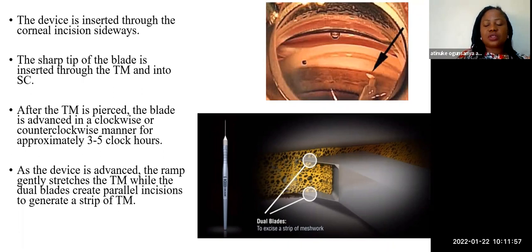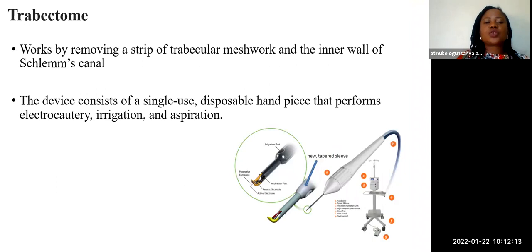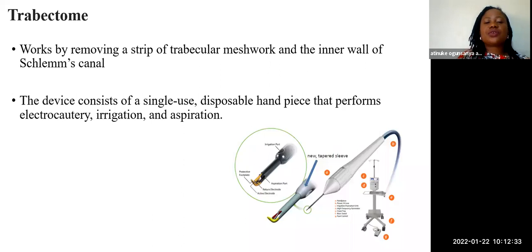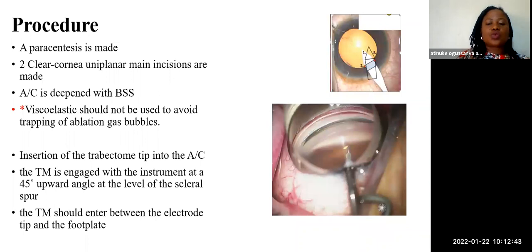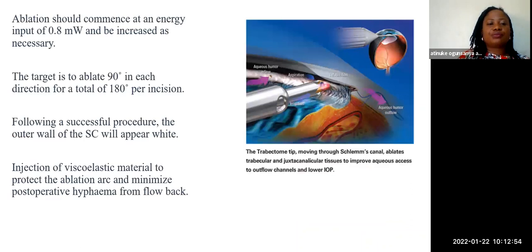A large strip of trabecular meshwork can be removed with intraocular forceps. The Trabectome works by removing a strip of trabecular meshwork and the inner wall of Schlemm's canal, providing even more direct access to the collector channels. The device consists of a single-use disposable handpiece that performs electrocautery, irrigation, and aspiration — essentially using cautery to disrupt the angle structures and expose Schlemm's canal or the collector channels directly.